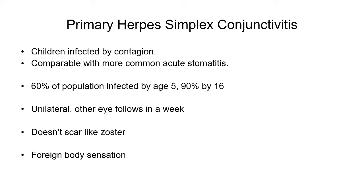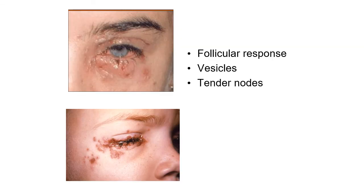Primary herpes simplex conjunctivitis occurs in children and is due to contagion. It can be comparable to acute herpetic stomatitis with ulcers at the angle of the mouth. 60 percent of the population is infected by age five and 90 percent by age 16. It is unilateral but, unlike zoster ophthalmicus, there is no scarring. The patient may complain of foreign body sensation, and pictures show affection of the lid and conjunctiva with follicular response, vesicle formation, and tender lymph nodes.